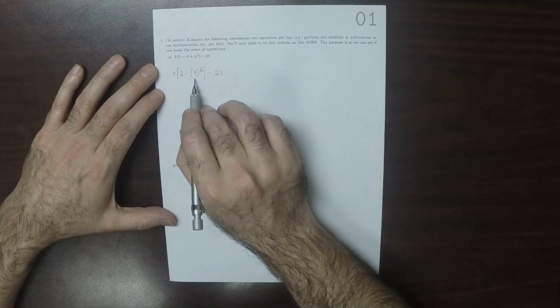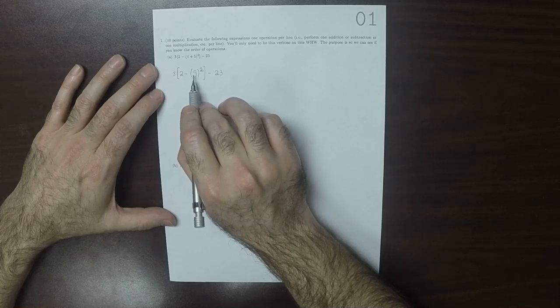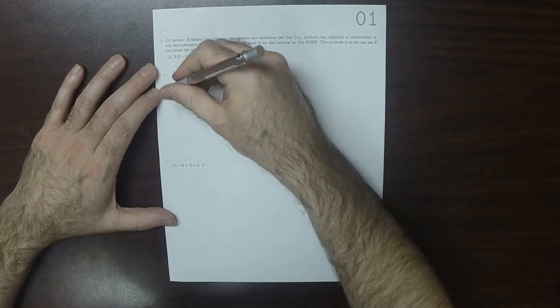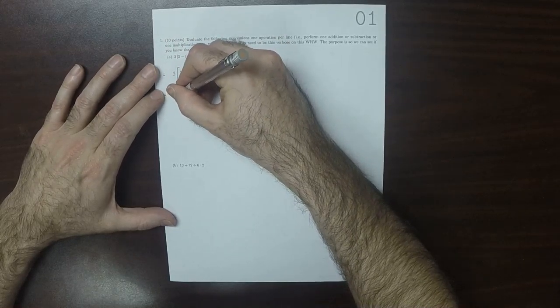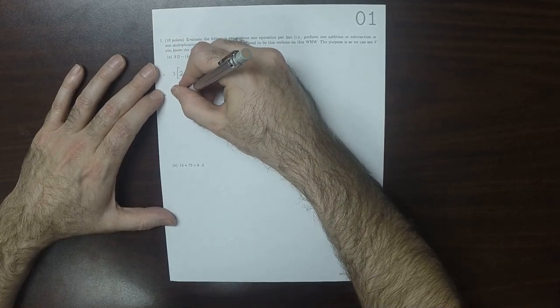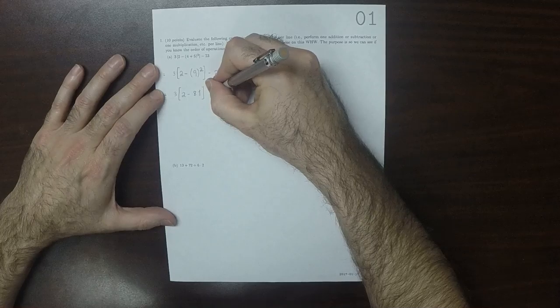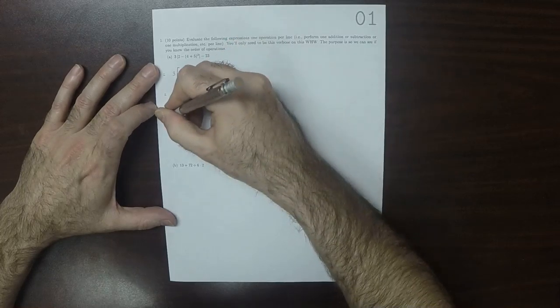And now there's no operations inside of those parentheses. So now this is what's next, that exponentiation. 3 multiplied by 2 minus 81 minus 23 equal.